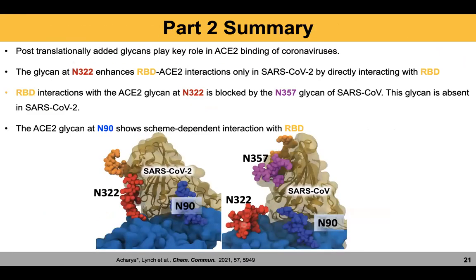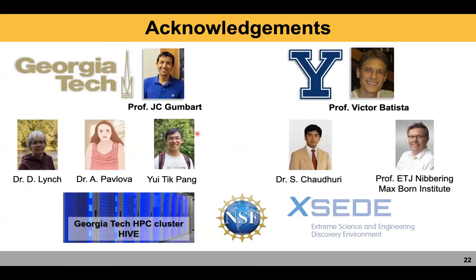To summarize: post-translationally added glycans play a key role in S2 binding to the coronavirus receptor binding domain. N90 can make more contact with SARS-CoV-2 than SARS-CoV-1, and in the SARS-CoV-2 case, that interaction is blocked by the additional glycan absent in SARS-CoV-2. The direct interaction of N90 glycan with the SARS-CoV-2 receptor binding domain depends on which glycosylation scheme is used. I'd like to thank my advisors JC Gumbert and Victor Batista, and all my collaborators on both projects.